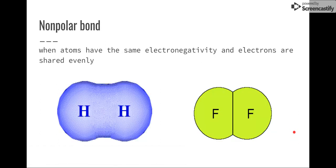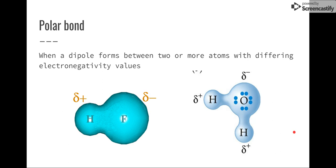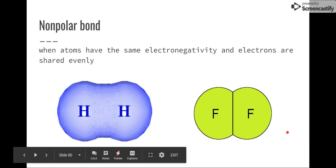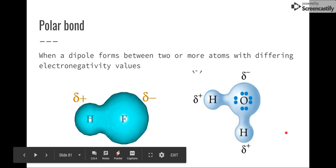Now just to review, when there's equal sharing and they have the same electronegativity, we call that a non-polar bond. But if there's unequal sharing and they make a dipole, we call this a polar bond.